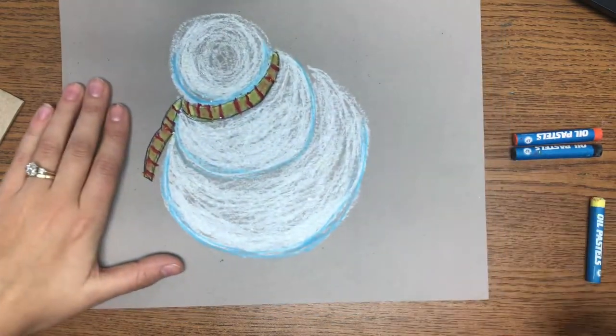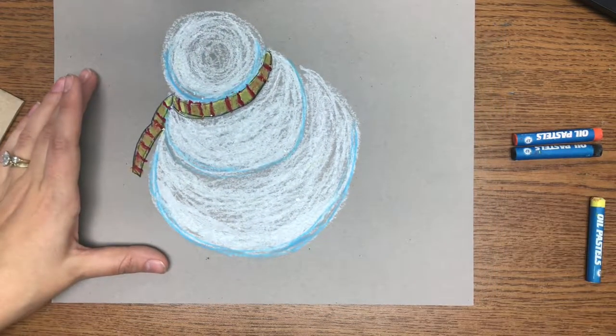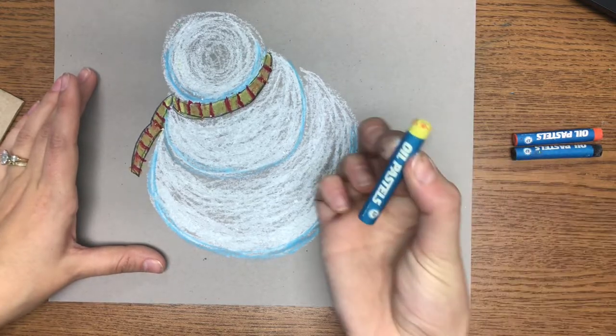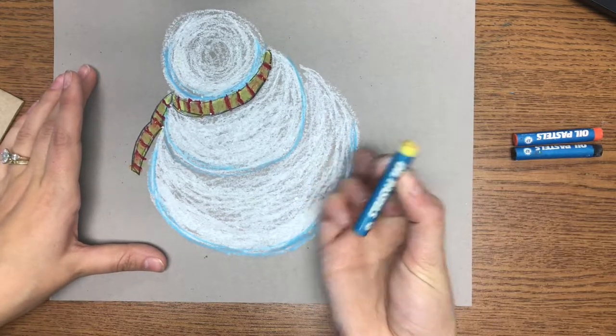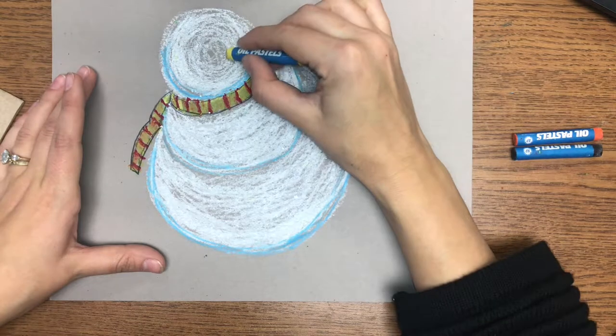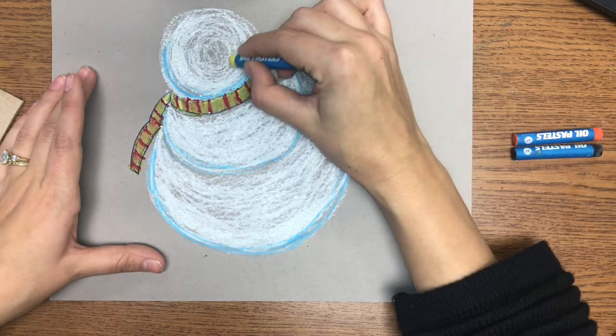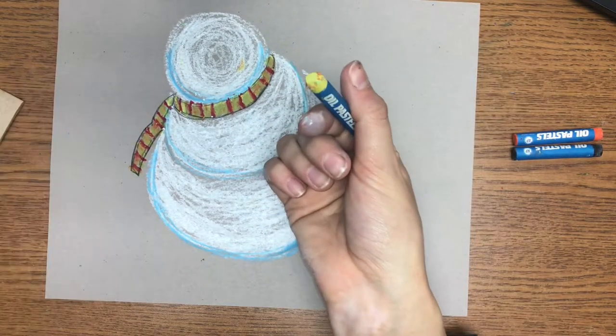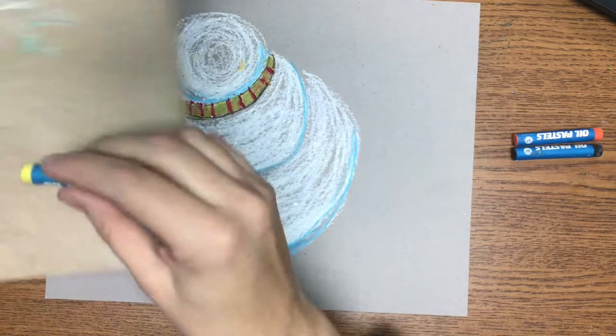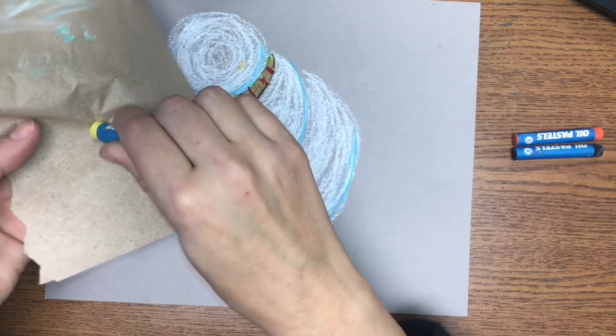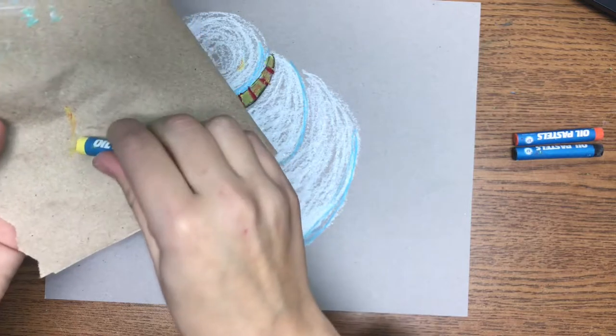The next thing that is going to make our snowman look three-dimensional is a highlight. Now we're going to use the color yellow. First check to make sure that it doesn't have any other color on it. You are going to use the tiniest bit of yellow because otherwise it's going to look like yellow snow. And we all know what that is. If you don't, come and see me later and I'll let you know.